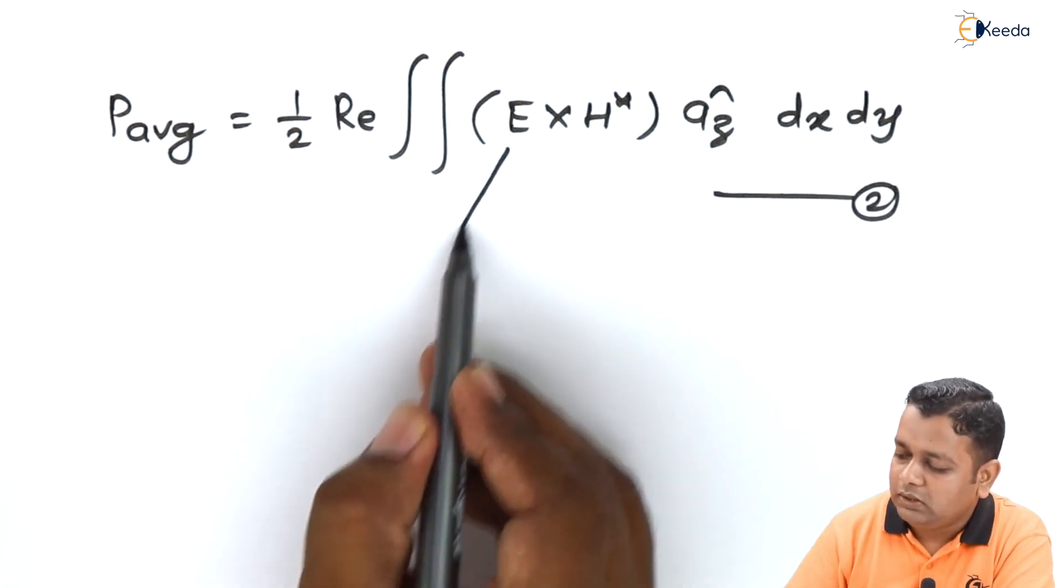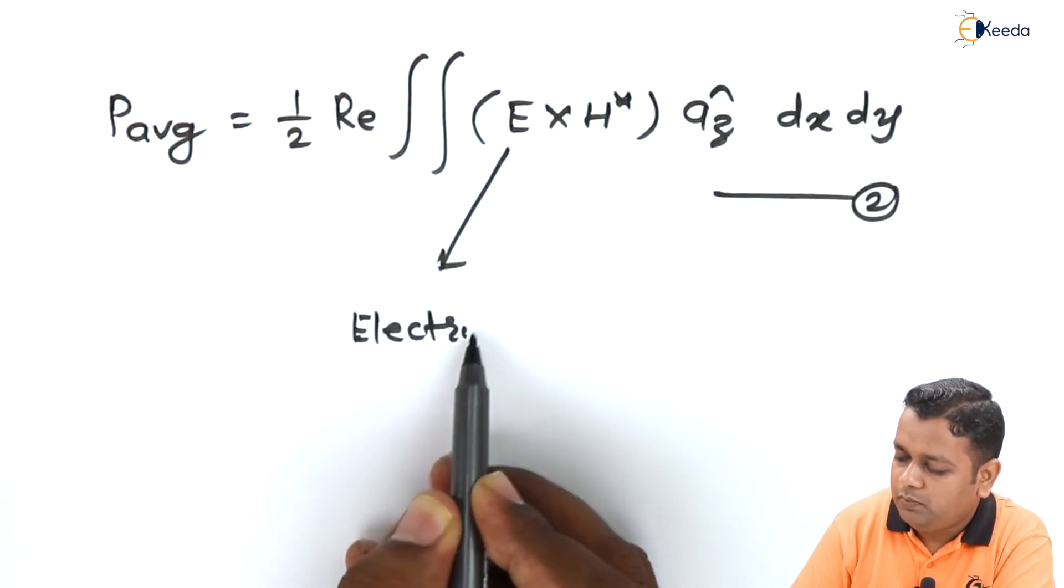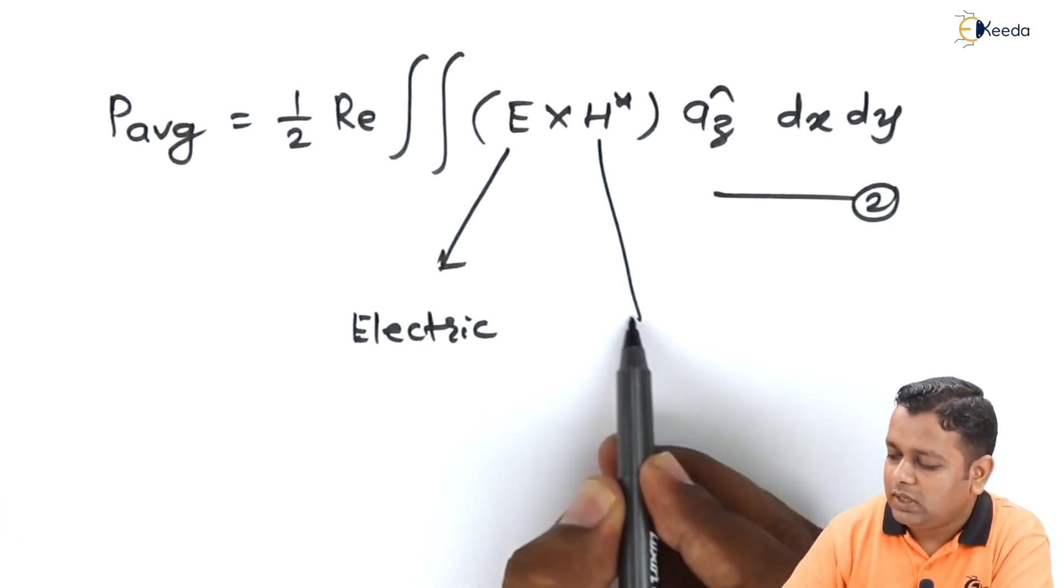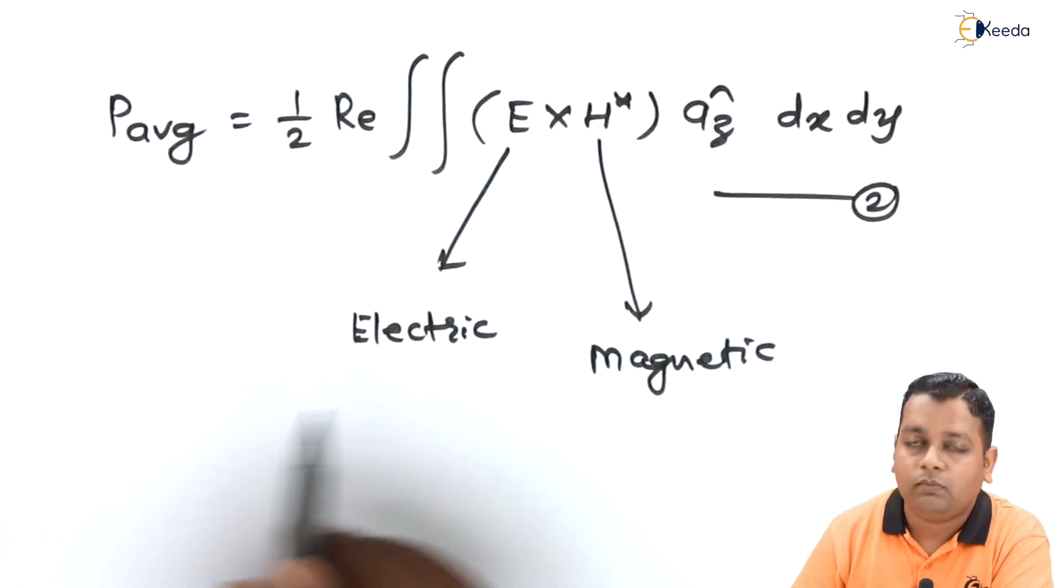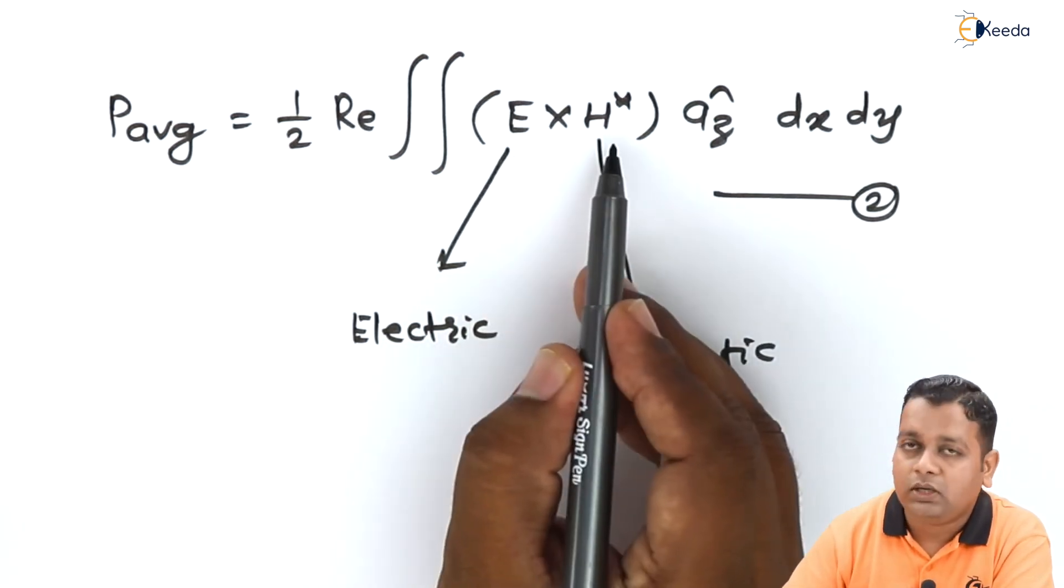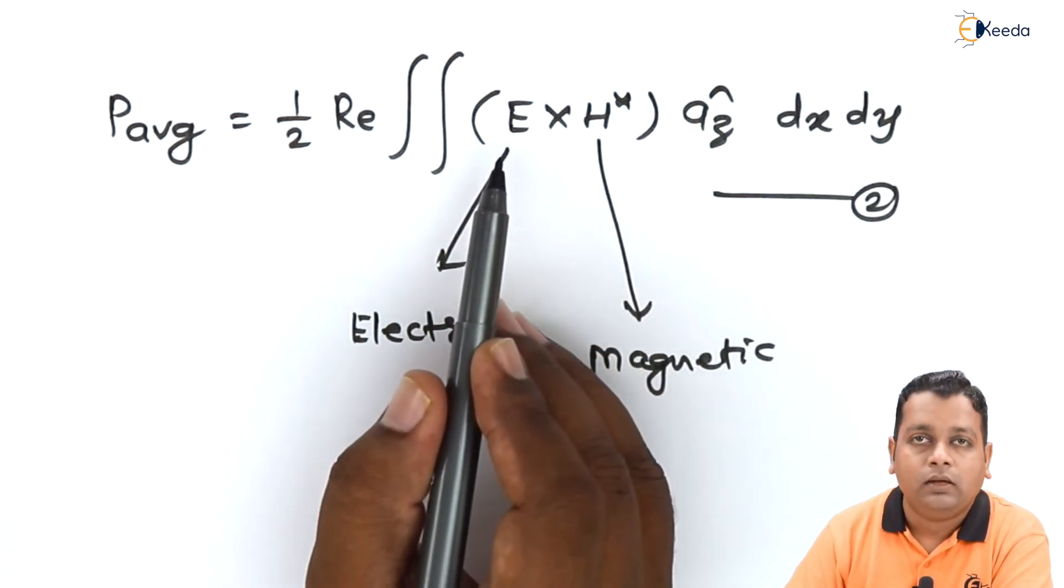In this representation, we have E representing the electric field vector, whereas H is representing magnetic field vector. This is basically from the Poynting theorem.